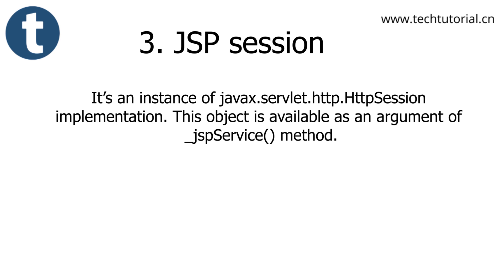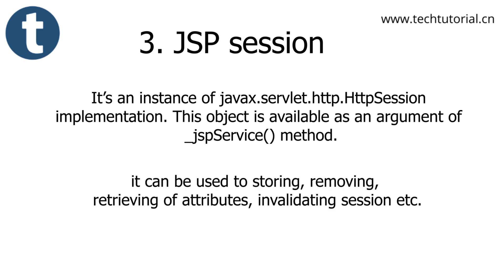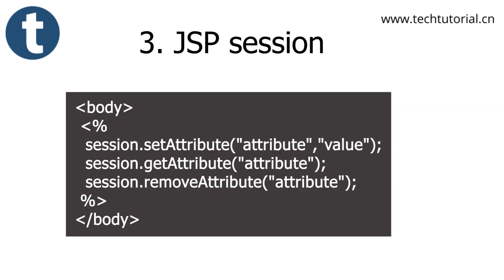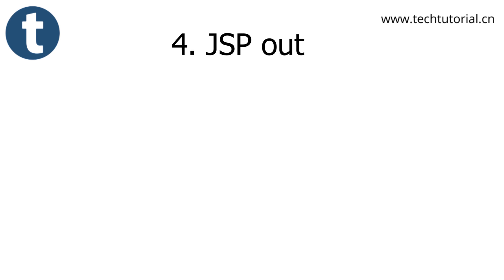The third one is the JSP session object. It is an instance of javax.http.HttpSession implementation. You can get a session object from the request object as well, but the container provides this variable directly. Using this session object, we can control user sessions — storing, removing, and retrieving attributes, and invalidating sessions. For example: session.setAttribute(attribute, value), session.getAttribute(attribute), and session.removeAttribute(attribute).